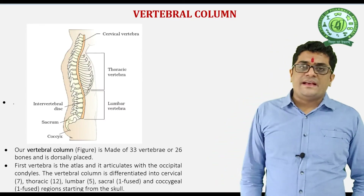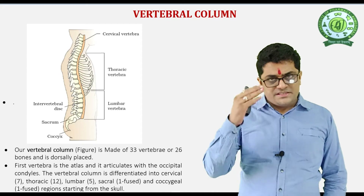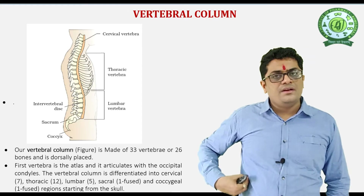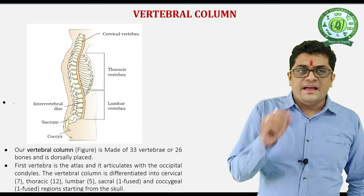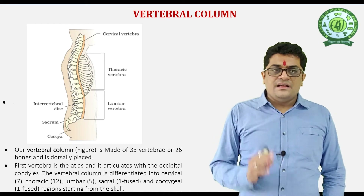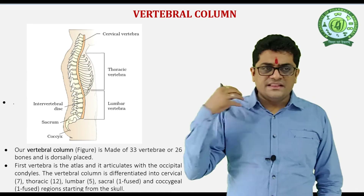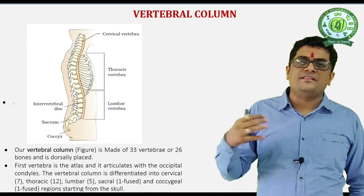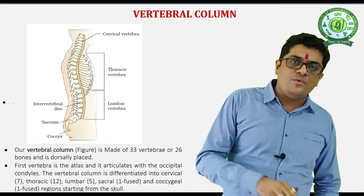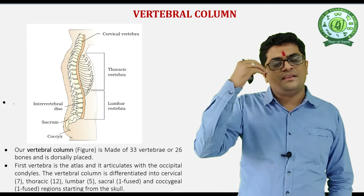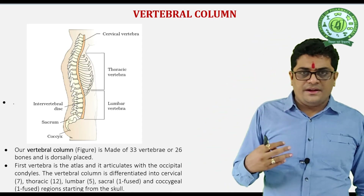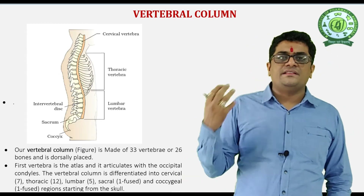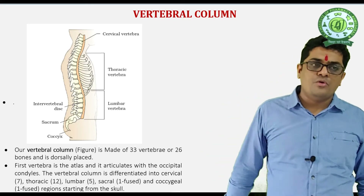The next part of the axial skeleton is the vertebral column, which is divided into 5 sections: cervical, thoracic, lumbar, sacral, and coccyx. In the vertebral column there are 33 vertebrae and 26 bones. The cervical part has 7 vertebrae and 7 bones. The thoracic part has 12 vertebrae and 12 bones. The lumbar area has 5 vertebrae and 5 bones. In the sacrum, there are 5 vertebrae but only 1 bone because they are fused. In the coccyx, there are 4 vertebrae and 1 bone.